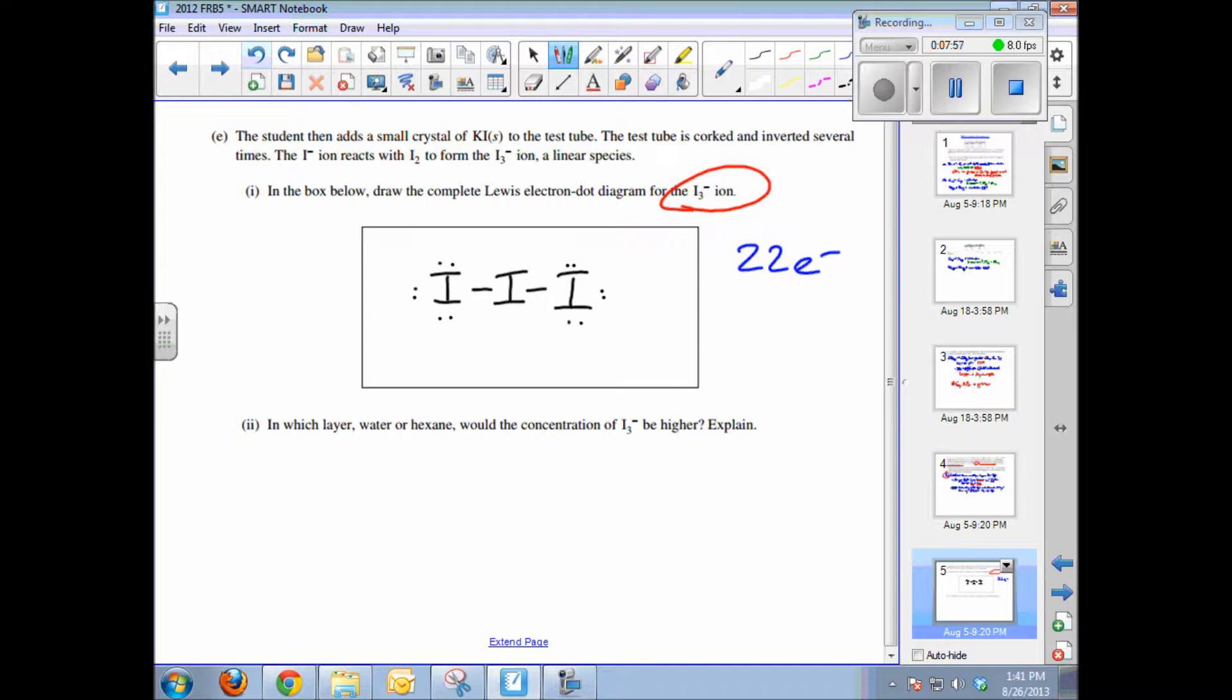14, 16. Add pairs to form an octet on the terminal atoms. And we've used 16 out of 22. So that means I've got 6 more electrons to use. So I'm going to have 3 lone pairs around the central iodine there. Now don't forget, on an ionic species, you have to show the charge on the structure. So you draw brackets and a charge on the entire structure.